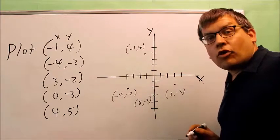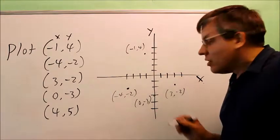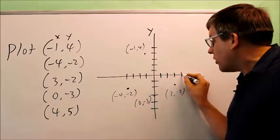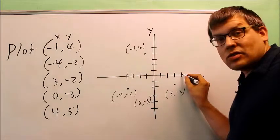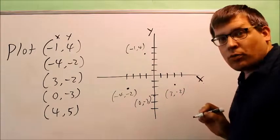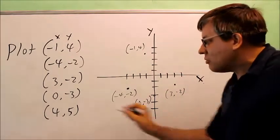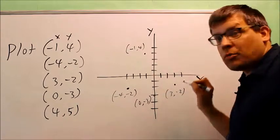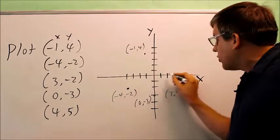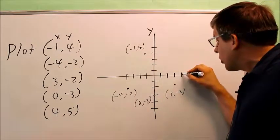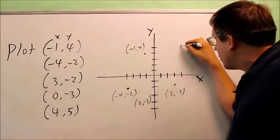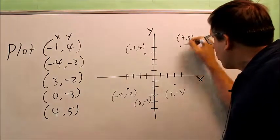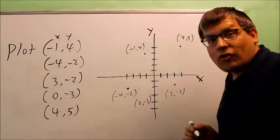Finally, we have four, five. Since both values are positive, we go to the right four places and then up. Go to the right — one, two, three, four — and from there go up five units: one, two, three, four, five. Right here is the coordinate four, five.